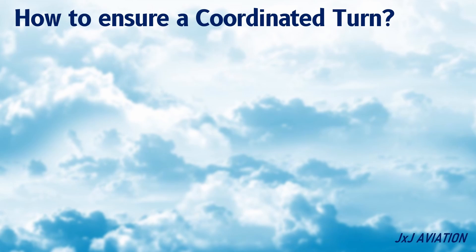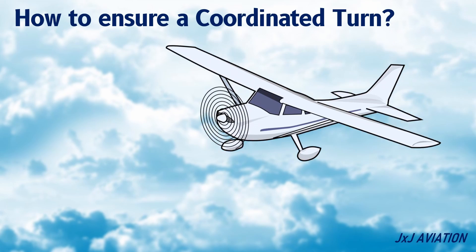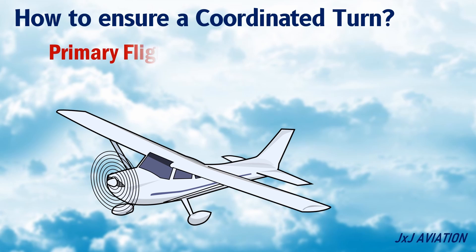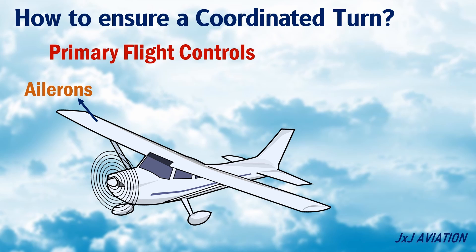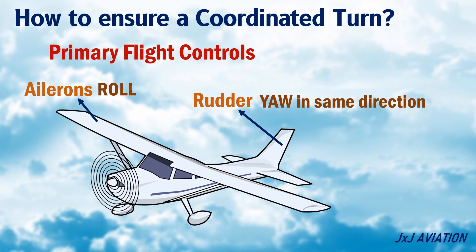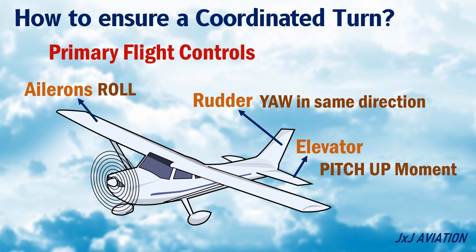How to ensure a coordinated turn? In order to execute a coordinated turn, all three primary flight controls are needed. The ailerons are used initially to create a roll moment. The rudder is then used in the same direction to prevent a sideslip and to assist the aircraft into the turn. The elevator is used to create a pitch up moment so that the aircraft's altitude does not decrease.